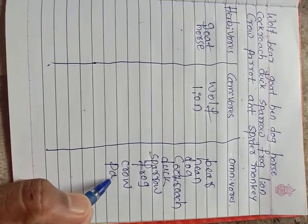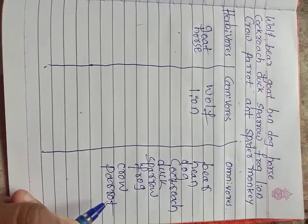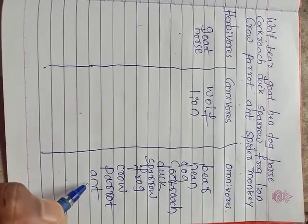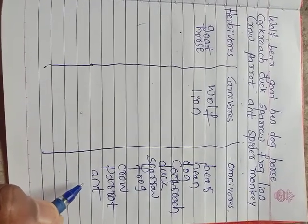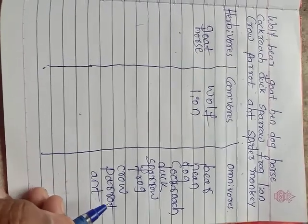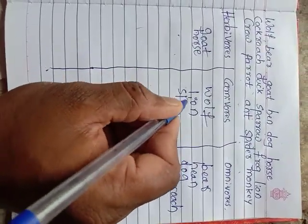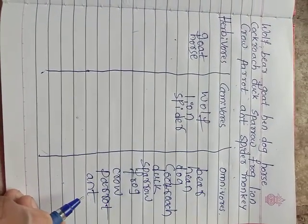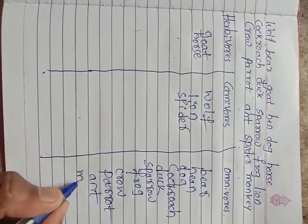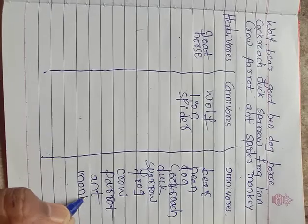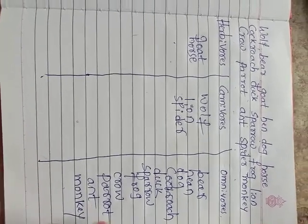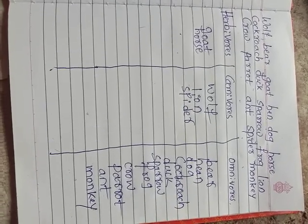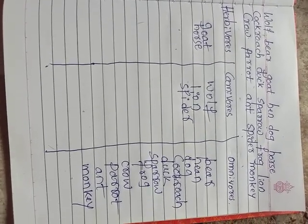Crow is omnivorous. Parrot is omnivorous. Ant is also omnivorous. Spider is carnivorous. And monkey is omnivorous. In this activity, many of the animals listed are omnivorous. Compared to animals in our surroundings, many animals are omnivorous.